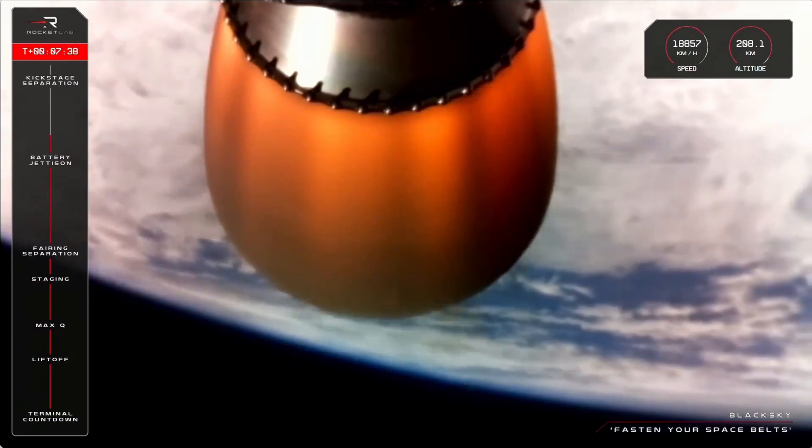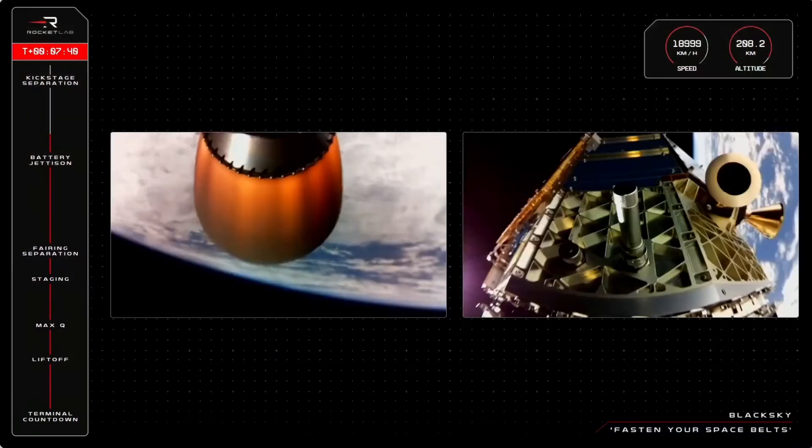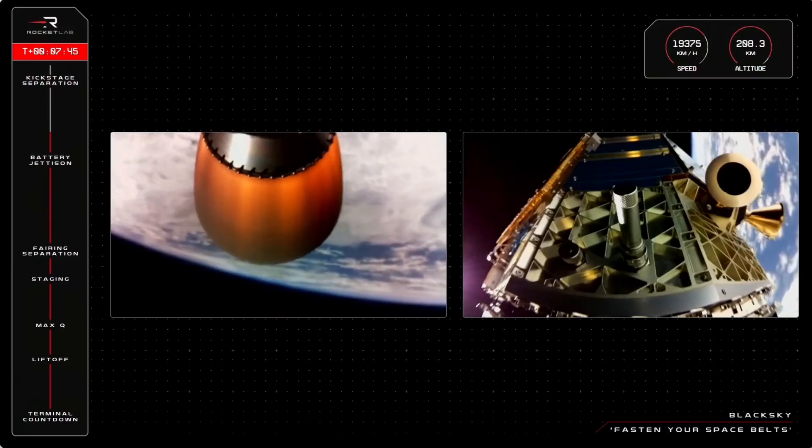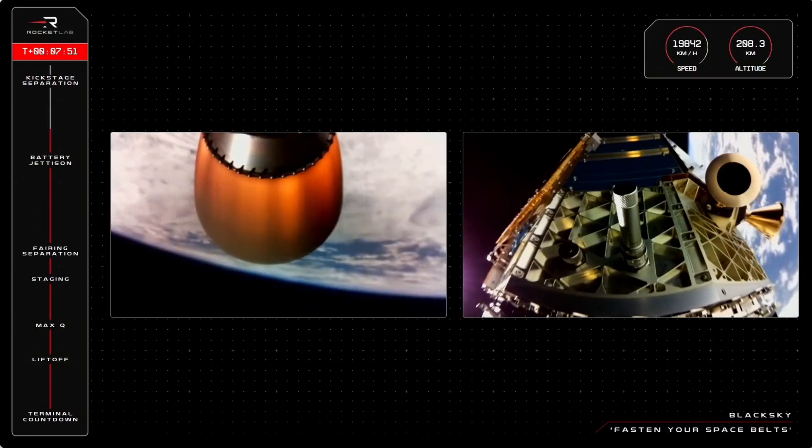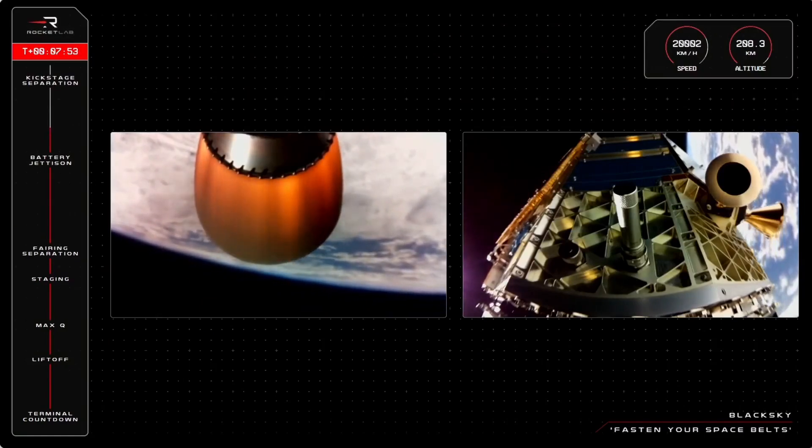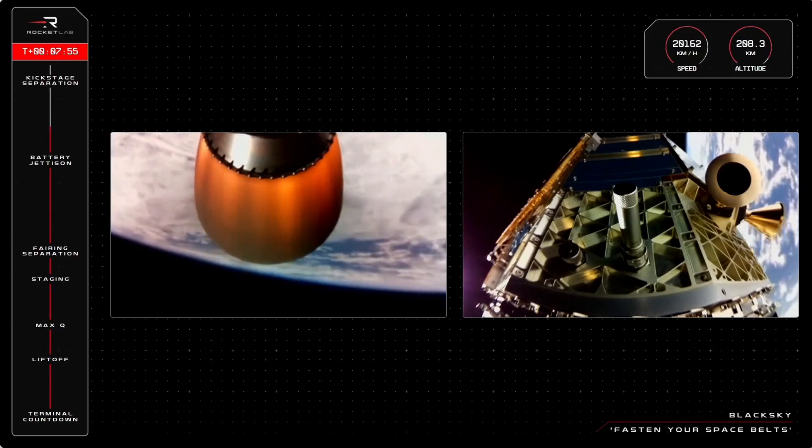At T plus seven minutes since launch, that means we only have a couple more minutes to go until Electron concludes this first phase of the mission. Our speed is at more than 19,000 kilometres an hour, so not much more to go now until we reach that optimal insertion speed of around 27,000 kilometres an hour.